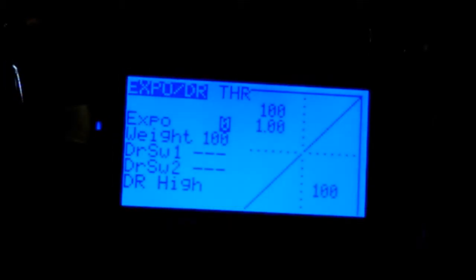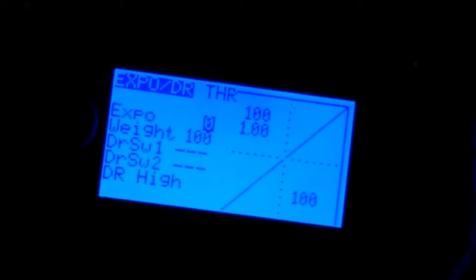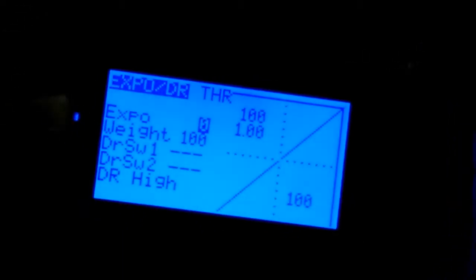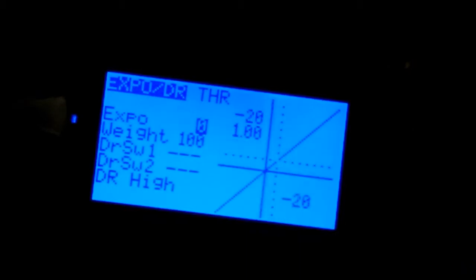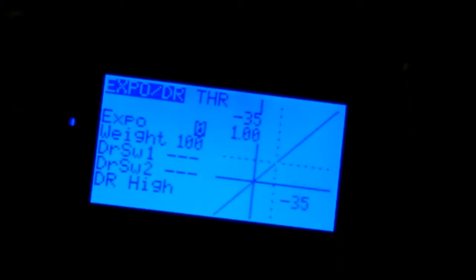All right. So starting off with Throttle Expo. When you don't have anything set up in here, it'll look like this. So what you want to do is start off with... So if you move your throttle up and down, you're going to be adjusting two halves. The upper half and the lower half. So I'll start off with the lower half.